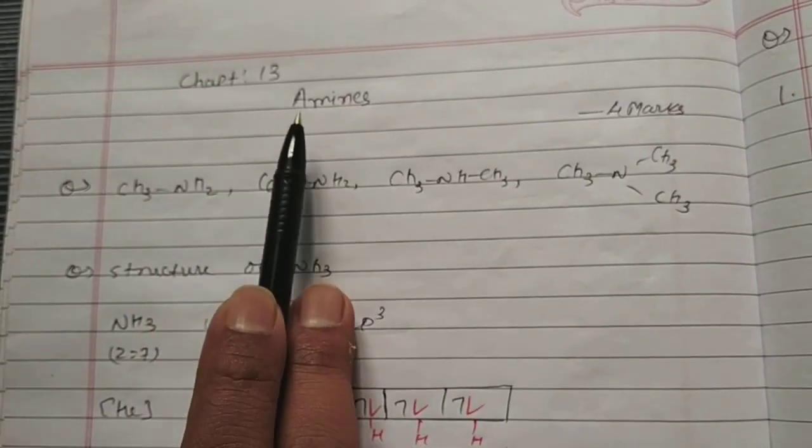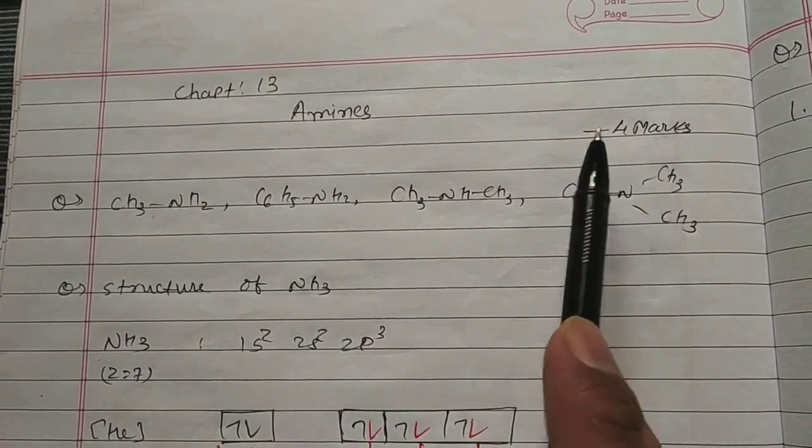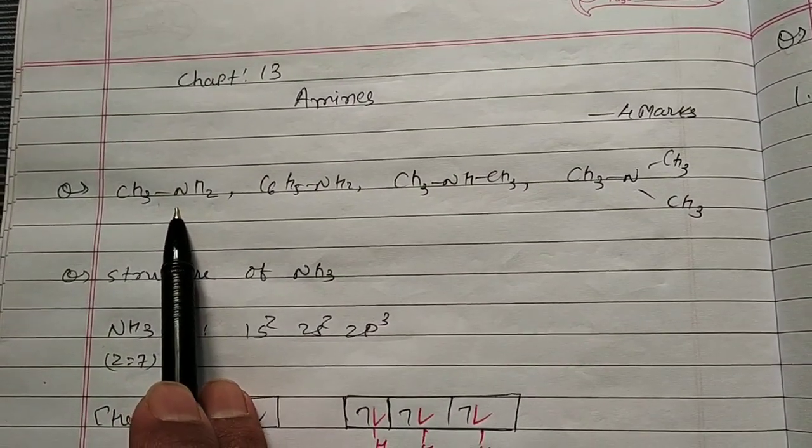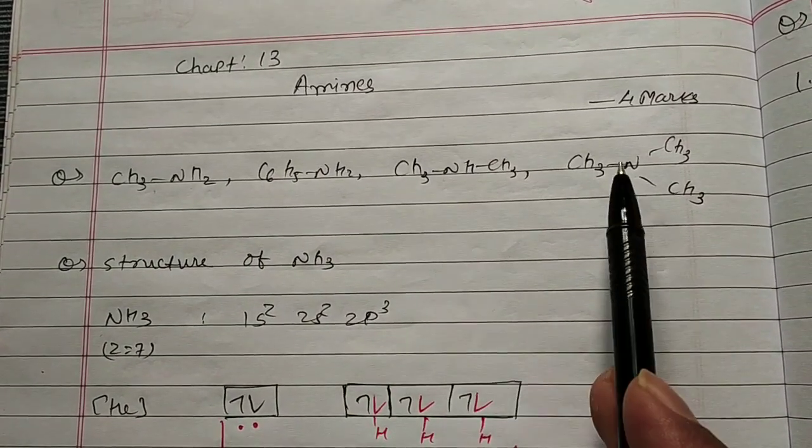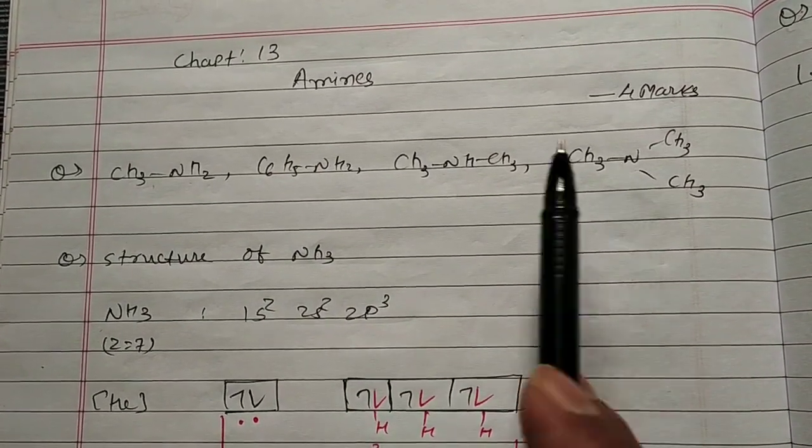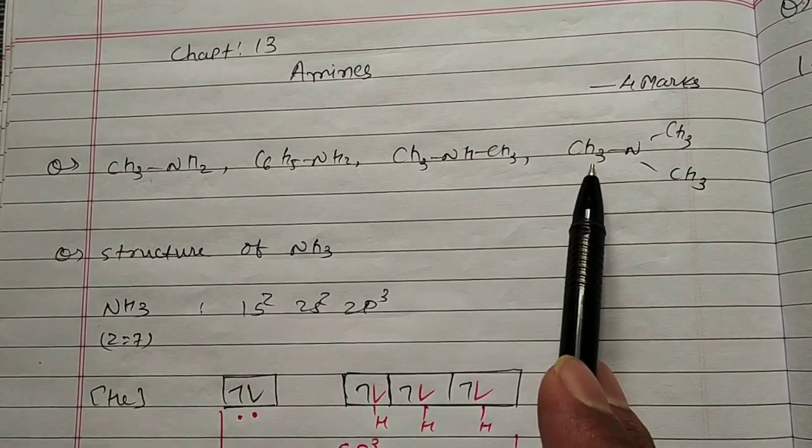Hi friends, in this session we will start with chapter number 13, Amine, which is 4 marks. Examples are methyl amine, aniline, secondary amine, and tertiary amine. So in this session we are discussing nitrogen-containing compounds, specifically amines.